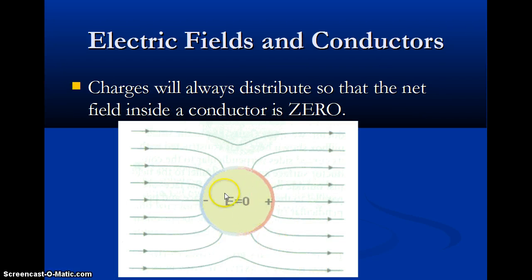So if the electric field wasn't zero on the inside, there are all these free electrons that could, there are all these electrons that are able to move around. So if there was an electric field that pointed in one direction or the other, they'd move.